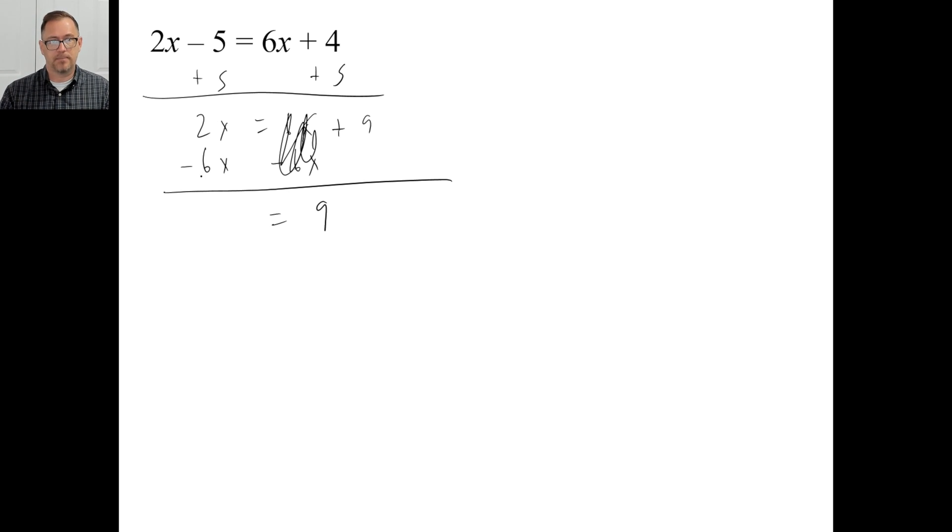So 2x minus 6x is negative 4x. And the last thing we have to do is, of course, divide by negative 4. And you can probably do that in your head. But the answer is going to be negative 9 over 4. And a positive divided by negative is overall negative. And there you go.